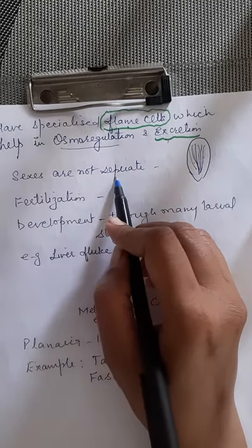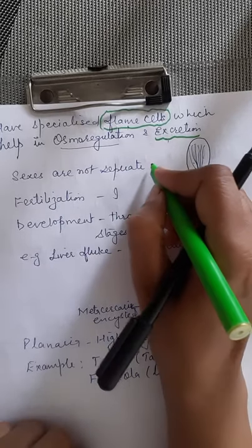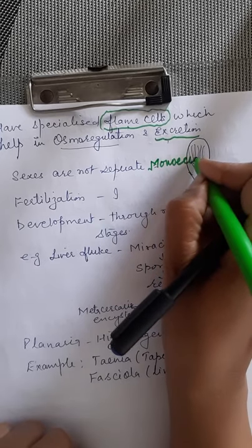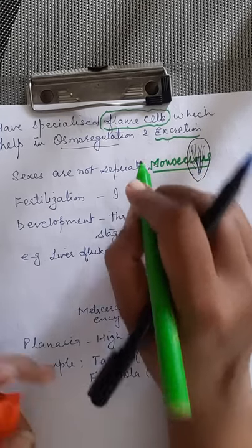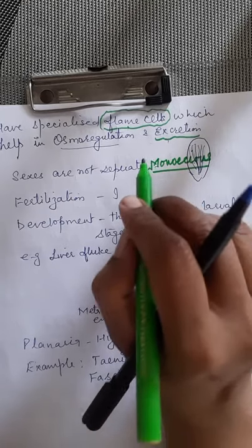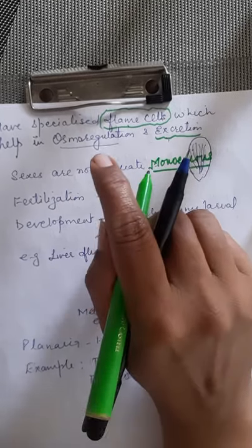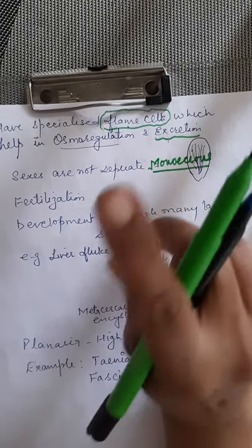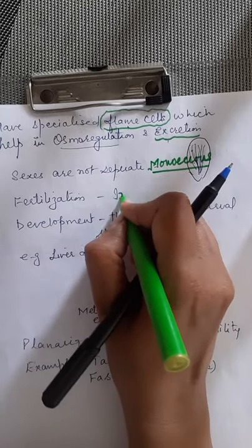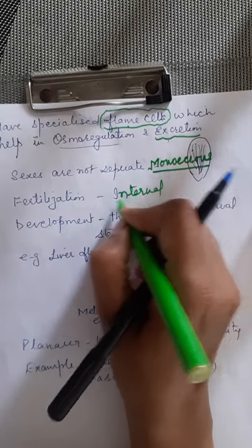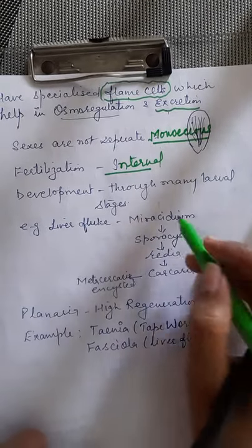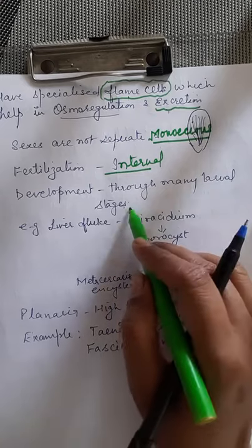Sexes are not separate — they are monoecious, meaning both male and female reproductive organs are present in a single individual. Fertilization is internal fertilization. During development, they pass through many larval stages, which is a characteristic feature.